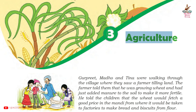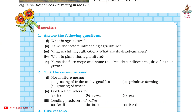Chapter 3 Agriculture, Question Answers from Class 8, Subject Social Science, Book Resources and Development. Exercises: First, answer the following questions.